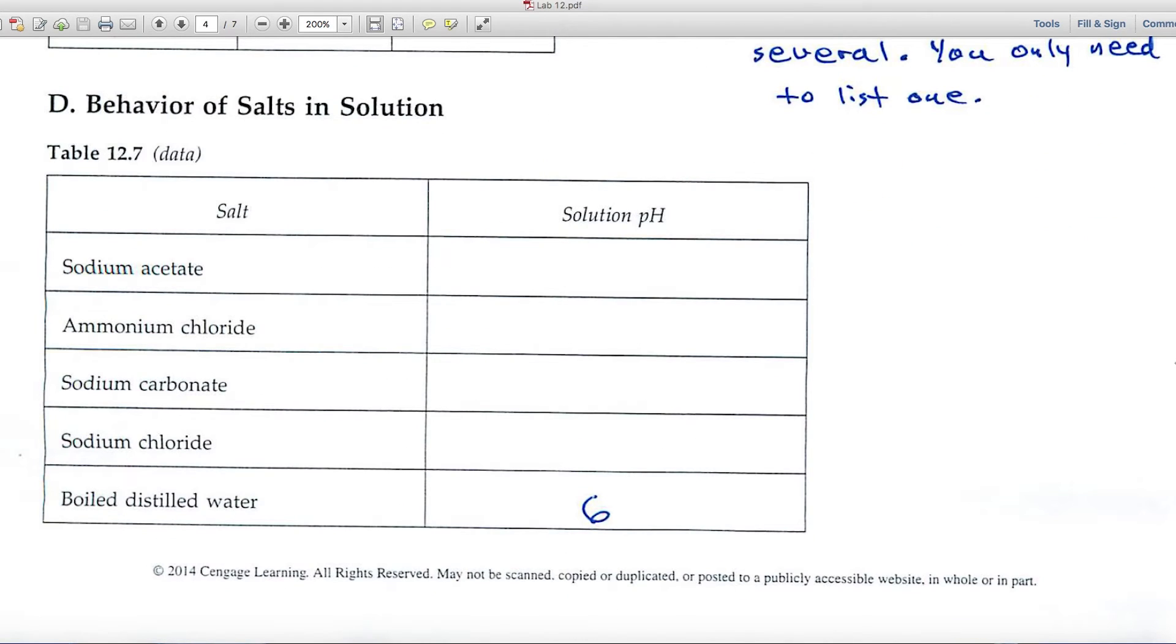Part D is the behavior of salts in solution. And you'll be measuring pHs, and again, if you needed to, you could record a pH range. Boiled distilled water down here, usually it's 6 rather than 7.